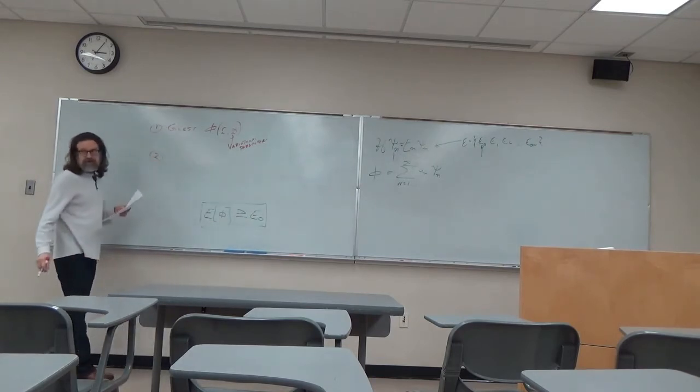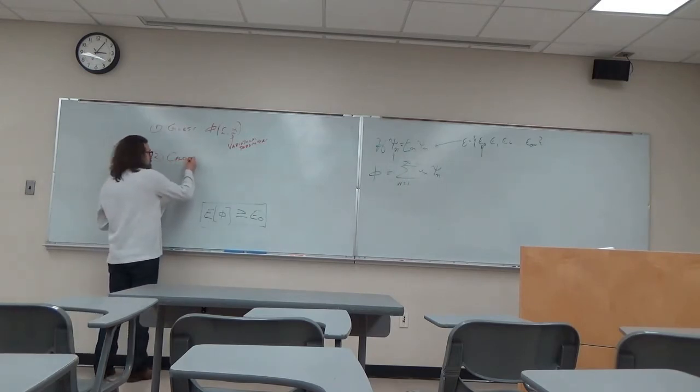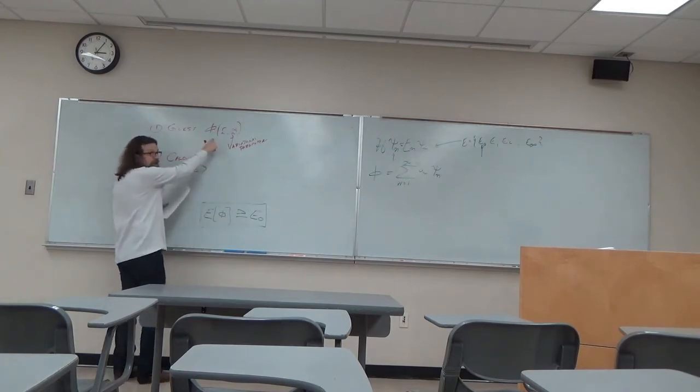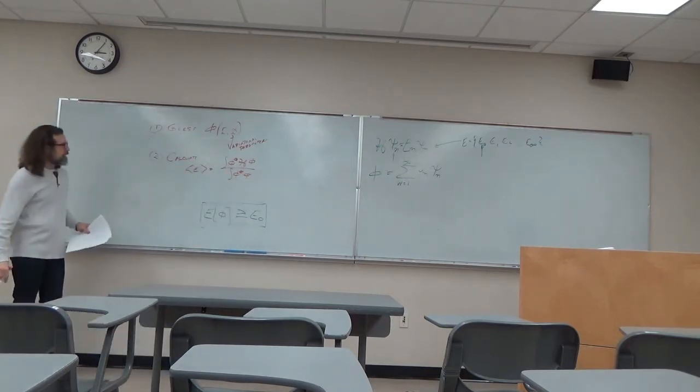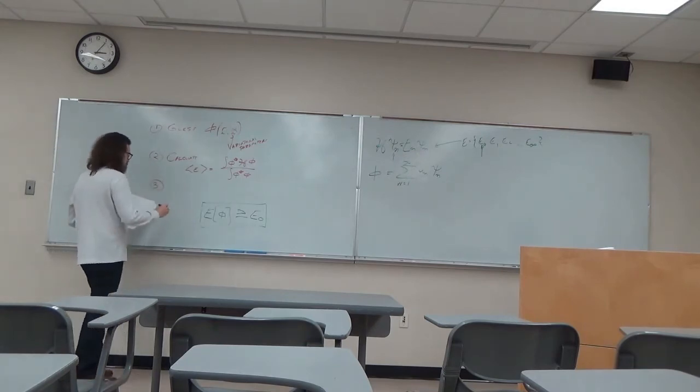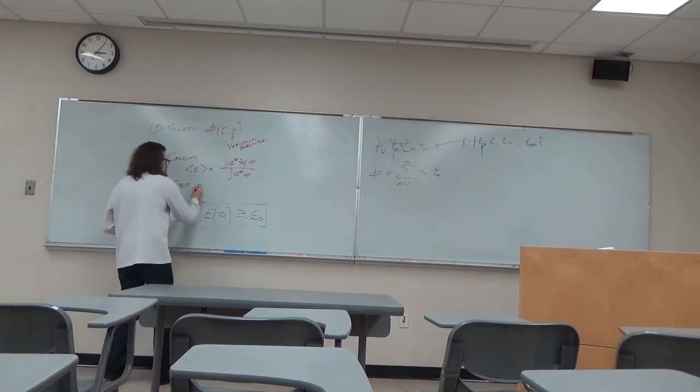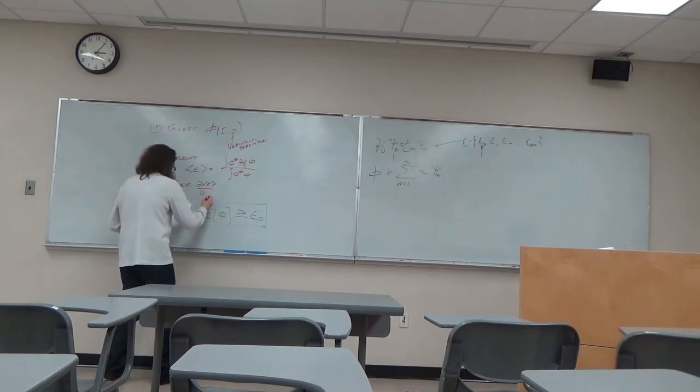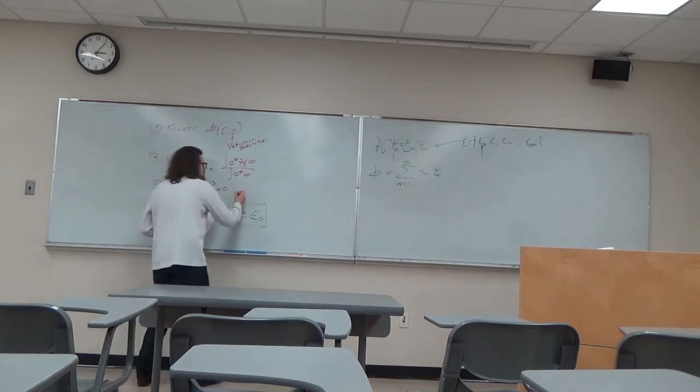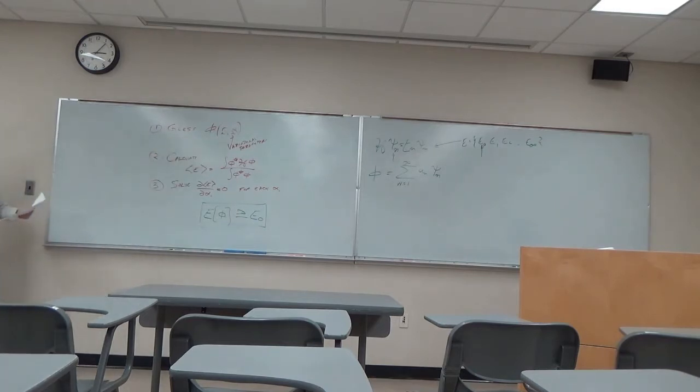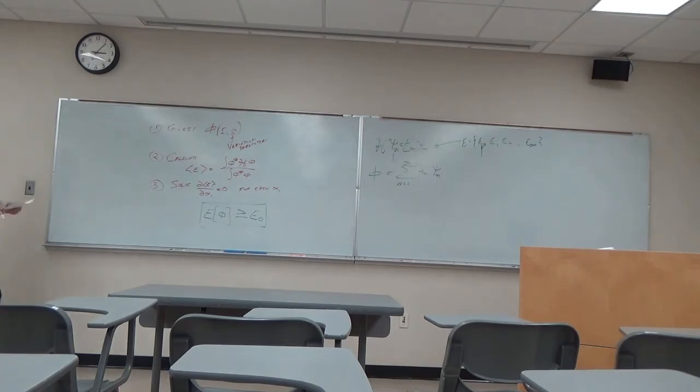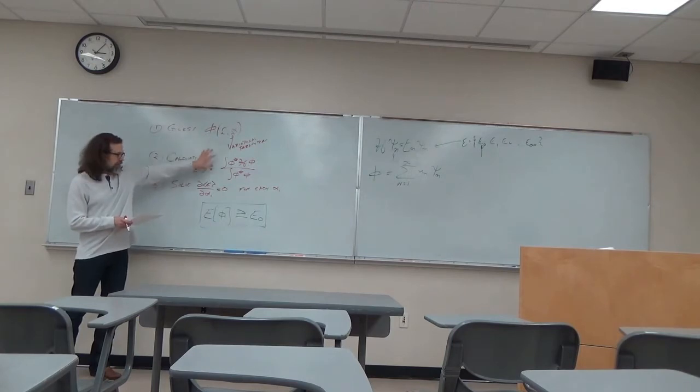Next, we calculate the expectation value using our guessed wave function. And third, solve dE/d alpha i equal to zero. For each alpha i. We take the derivative of the expectation value with respect to each of the parameters and set them equal to zero and solve those parameters. And that will give you the best guess based on what this should be.